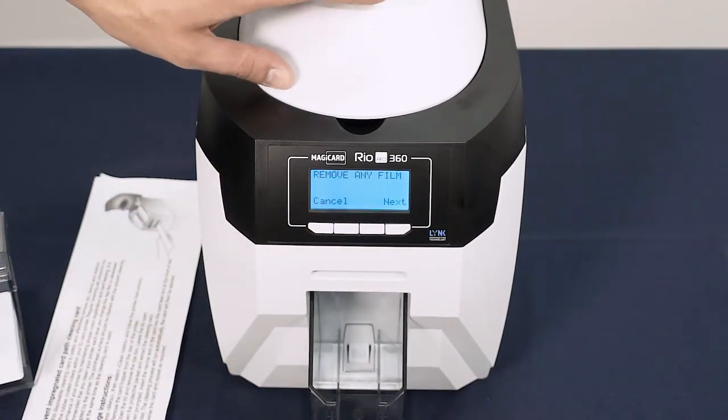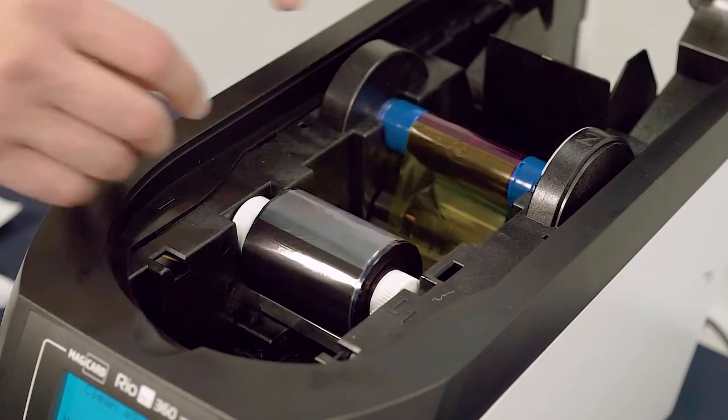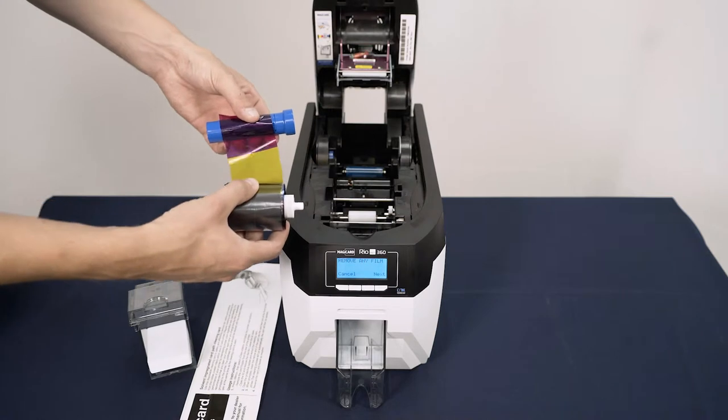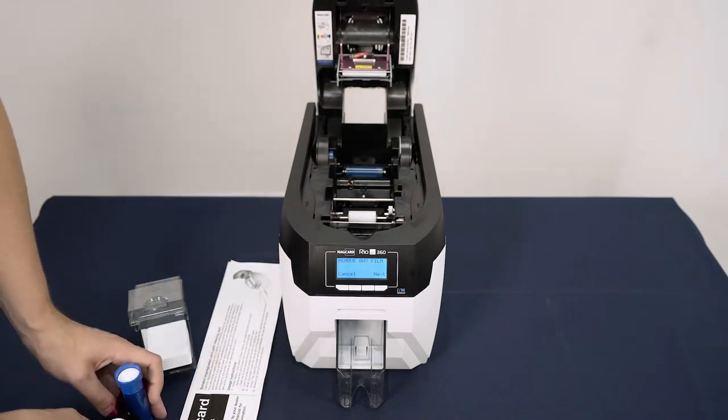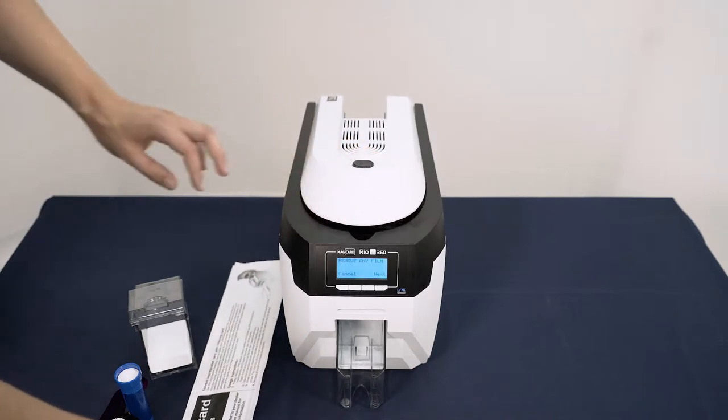The display will then prompt you to remove the dye film. Do this before continuing by pressing the button on the top of the printer to release the lid and remove the spools as shown. Place these to one side.